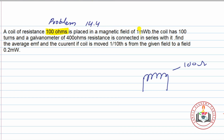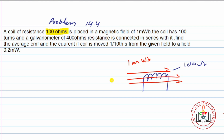اس coil کو magnetic field of 1 milliweber میں رکھا گیا ہے۔ جہاں پہ یہ coil رکھی گئی ہے وہاں 1 milliweber کا magnetic flux ہے۔ The coil has 100 turns — اس coil کے جو turns ہیں وہ بھی 100 ہیں، N is equal to 100۔